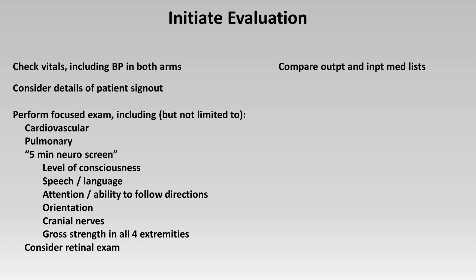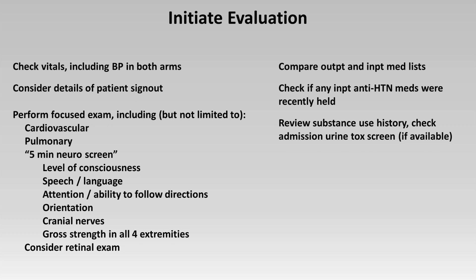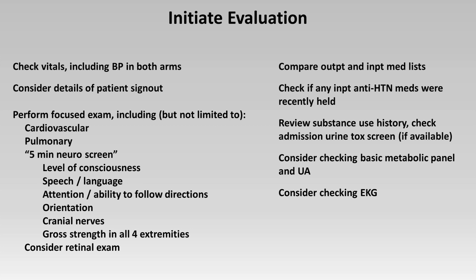Compare the outpatient and inpatient med lists for anything the primary team may have forgotten to continue in the hospital. Check if any inpatient antihypertensives were recently held — it's not unheard of for antihypertensives to be inappropriately held due to mild bradycardia, even meds that don't cause bradycardia at therapeutic doses like the dihydropyridine class of calcium channel blockers. Review the patient's substance abuse history and check an admission urine tox screen to assess for withdrawal. Consider checking a basic metabolic panel and UA for evidence of acute kidney injury or hematuria, and consider an EKG for evidence of secondary myocardial ischemia.